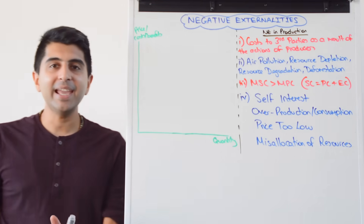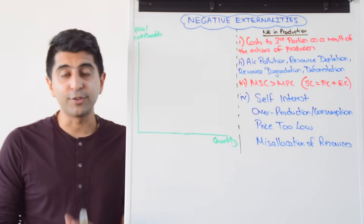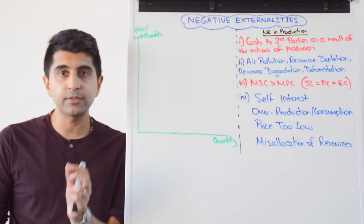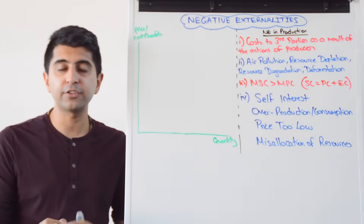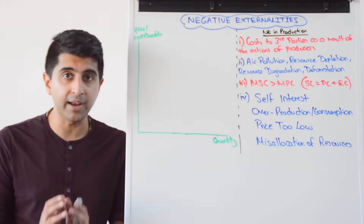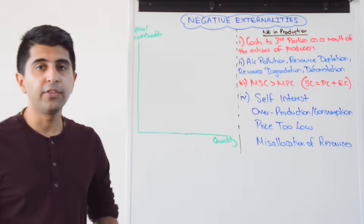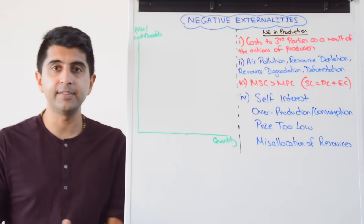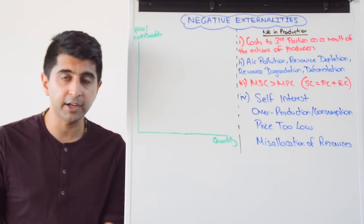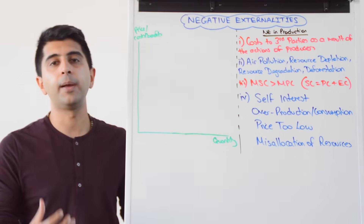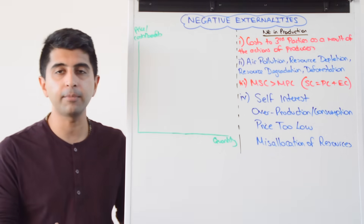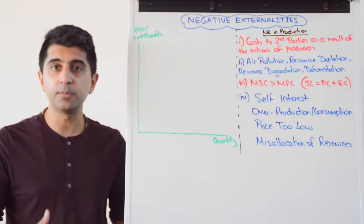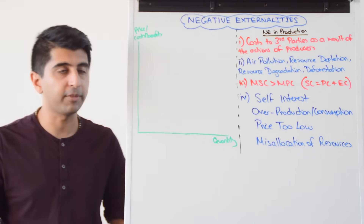Hi everybody. Negative externalities are costs on third parties as a result of the actions of a separate agent. There are two kinds of negative externalities: they can occur in production, when firms are producing something, or in consumption, when consumers are consuming something.